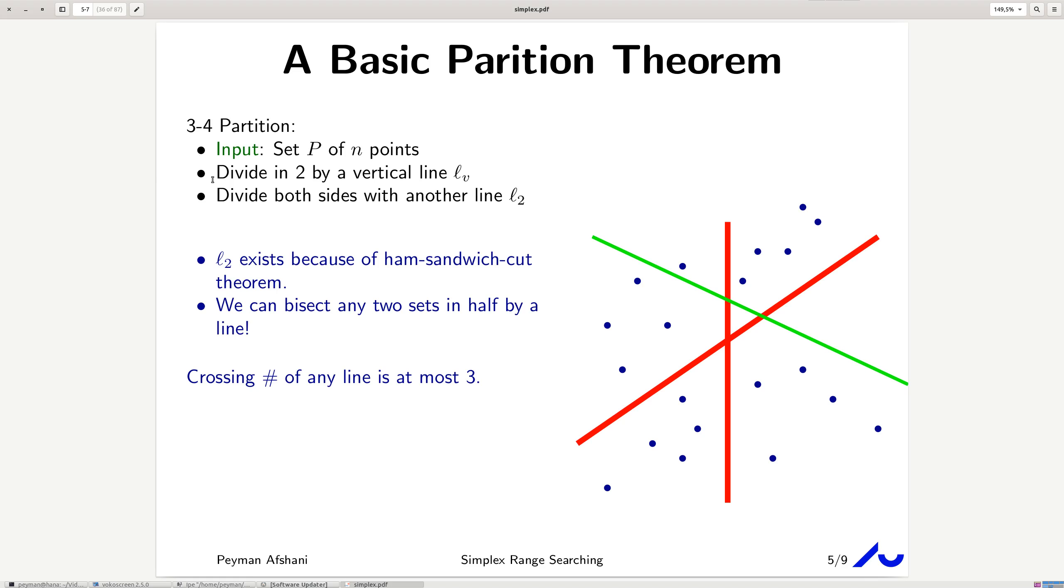The interesting thing about this 3-4 partition is that if you draw any line in the plane, obviously, any line can intersect three of these quadrants, right? Because you cannot draw a line that intersect all four. It has to go something like this to intersect all of the four quadrants created by two lines. Therefore, crossing number of any line is at most 3. So, that gives you, let's say, a recursive formula that goes like this.